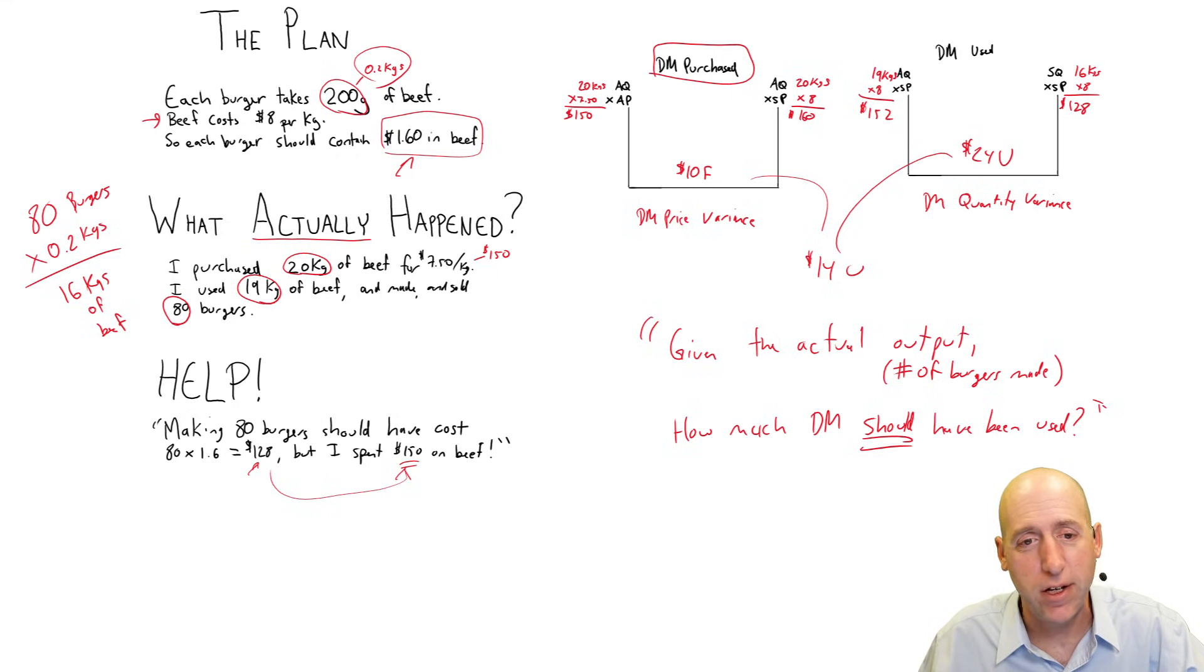So a few options. One, he can just change the budget. You can say, you know what? I'm actually using 250 grams of beef or two, he can change something in the kitchen. Maybe it's not him. Maybe it's an employee, but somebody is not using the beef as efficiently as they should be. There's a direct materials quantity variance. We've gotten to the bottom of it. And the number seems small, but if you're just starting a new business and you're blowing your budget, you're worried. And Bill was worried.